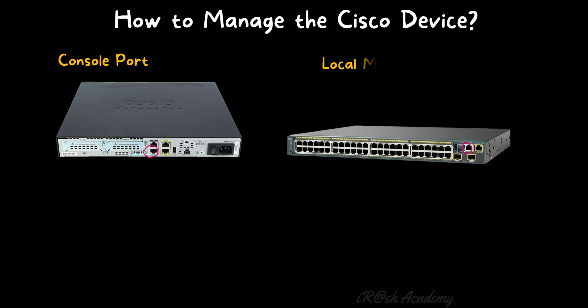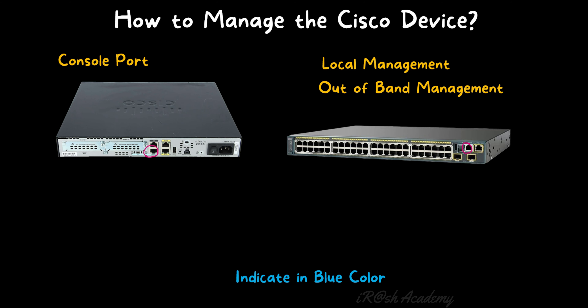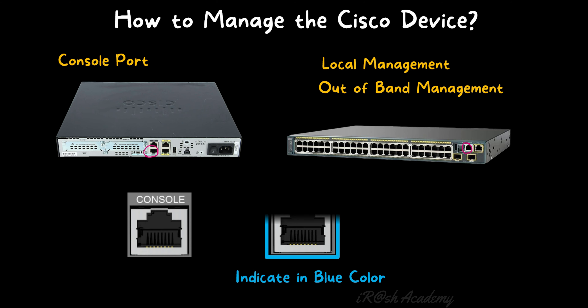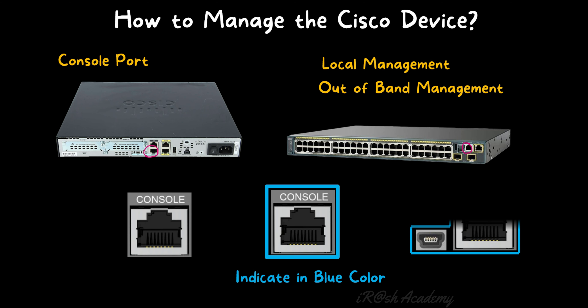The console port is also called the local management port because it helps to manage the device locally. It is also called the out-of-band management port because we are not using the network bandwidth to access the device via the console port — it goes through the local console lane and is not part of the network bandwidth. In most devices, the console port is indicated in blue color. If you see a blue square or blue indicator on a port, you can recognize it as a console port. Some devices also have a USB console port in addition to the normal RJ45 console port.